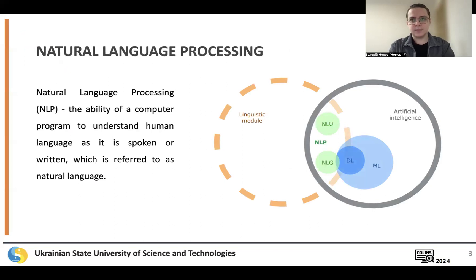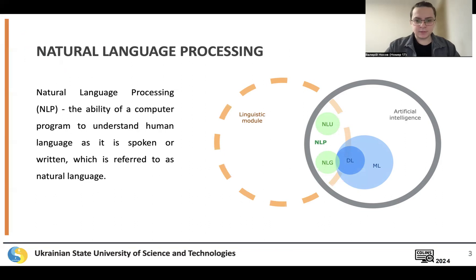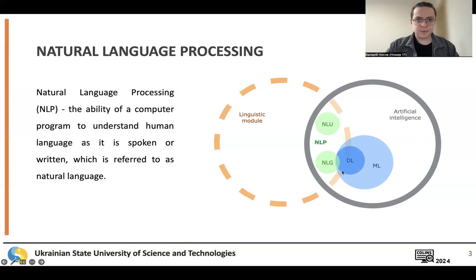Natural language processing is the ability of a computer program to understand human language as it is spoken or written, which is referred to as NLP. NLP consists of a linguistic core and artificial intelligence. Additional key components include NLU, natural language understanding, and NLG, natural language generation. NLU involves the comprehension of human language by machines. NLG involves the generation of human-like text by machines.